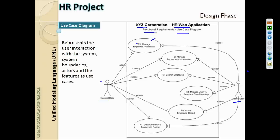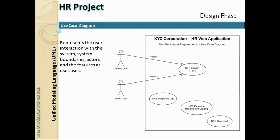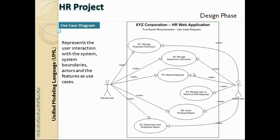Use case diagrams are very useful, though not every project will have them. Next comes another use case diagram covering non-functional requirements, with security as one element. Looking at the authorization requirements: general users cannot access the R4 requirement (manage user-role mapping), whereas admin users can. Admin users have access to all screens; general users do not. This diagram precisely explains the functional scope, authorization requirements, and roles — two actors on either side indicate two different user roles accessing the application.